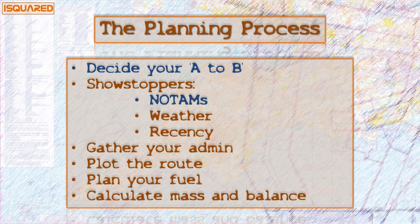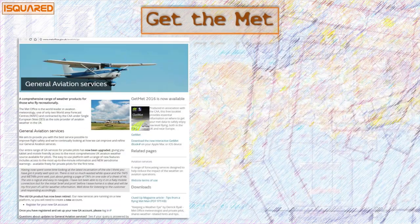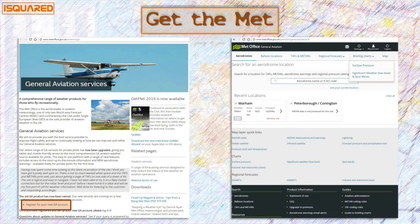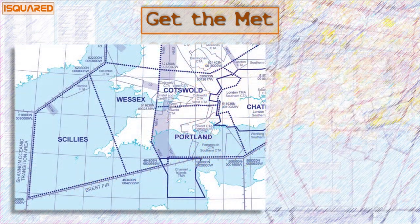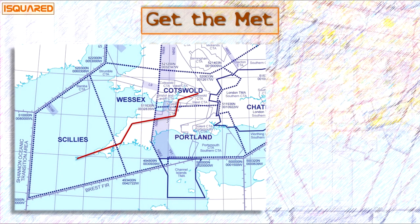Next we're going to check the MET and note some specific details for our calculations later. You can register a free account with the Met Office which gives access to their GA briefing service — we're interested in regional forecasts, significant weather, and spot winds. To find our regional pressure settings we need to know the altimeter setting regions we'll be flying in. Back on the AIS en-route section, the map shows we'll be flying in the Scillies, Wessex, Portland, and Cottrell regions. The regional pressure setting is the lowest forecast mean sea level pressure for that region.